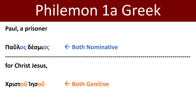So if we put that all together: Paul, a prisoner for Christ Jesus — Paulos desmios Christu Jesu. Let's read through that: Paul, a prisoner — Paulos desmios — for Christ Jesus — Christu Jesu.